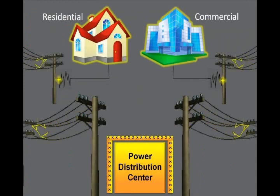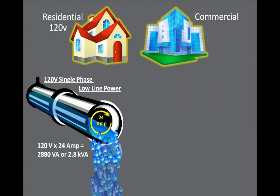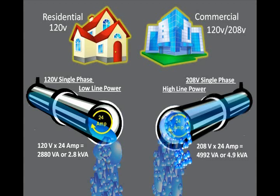All power from a power plant is generated the same. The same power that powers your home computer and appliances is the same power that runs massive data centers — the power is just distributed differently. In your home, power is distributed with 120-volt or single-phase low-line power. Data center power can also be distributed with the same 120-volt or single-phase low-line power. In this example, you can see 120 volts being pushed through 24 amps, which provides 2.8 kVA.